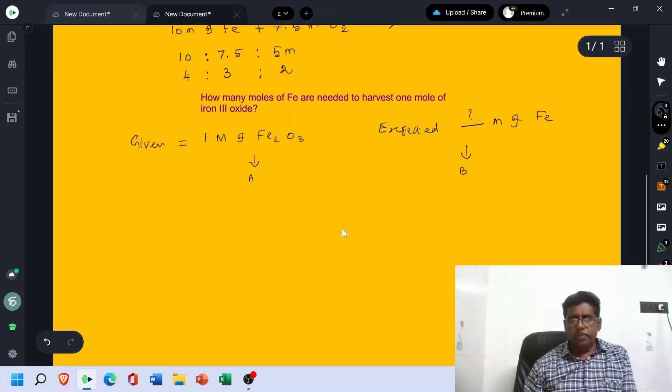Expected is how many mol of Fe. This is B. Now, mol B which is equal to mol A times the coefficient of B divided by coefficient of A.